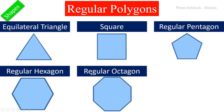Next one is a regular octagon. Octagon means eight — this shape consists of eight sides or edges, so it is called an octagon. In this shape, all sides are equal, so it is called a regular octagon.